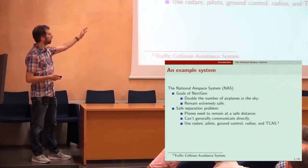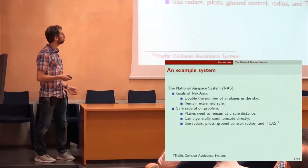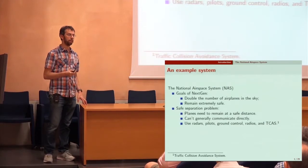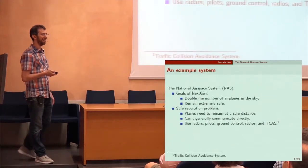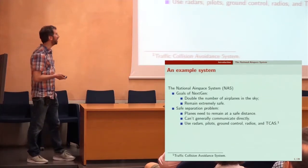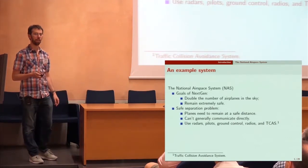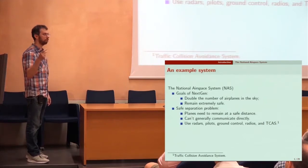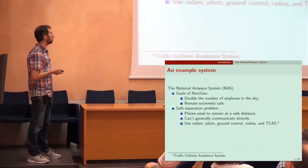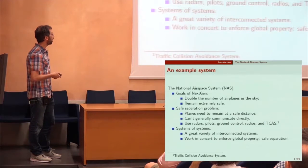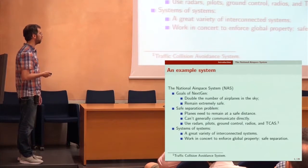Each of these systems is using a different kind of time-based behavior. The airplane is satisfying a differential equation; the pilot might be just some kind of delay of what he or she sees. The collision avoidance system, TCAS, sends the signals 'move up,' 'move down' — it just sends them whenever it needs to. So it's kind of just a signal as opposed to a differential equation. We have a great variety of interconnected systems that need to work in concert to enforce a global property: safe separation.